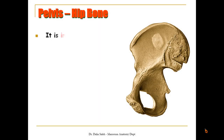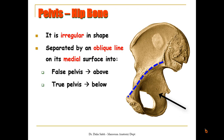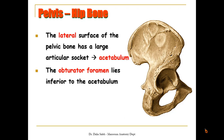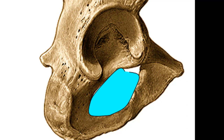This is a medial view of the hip bone. You can see that it is irregular in shape, separated by an oblique line on its medial surface into false pelvis above and true pelvis below. The lateral surface of the hip bone has a large articular socket — we call it the acetabulum — which articulates with the head of the femur to form the hip joint. Below the acetabulum lies a large foramen, we call it the obturator foramen, which in a living person is closed by a membrane called the obturator membrane, leaving a small canal just above it to form the obturator canal.